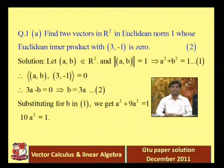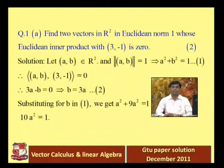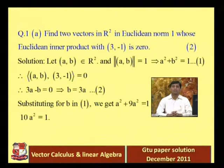We suppose vector (a, b) in R² satisfies two conditions: norm is 1 and Euclidean inner product with (3, -1) is 0. Taking norm of (a, b) equal to 1 gives √(a² + b²) = 1, so squaring both sides: a² + b² = 1. This is equation 1. The dot product condition gives 3a − b = 0, which is equation 2.